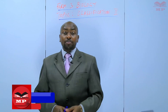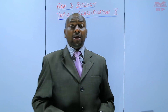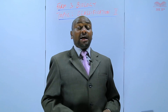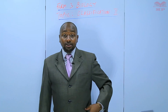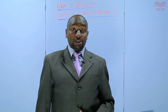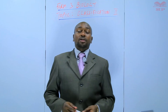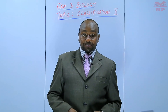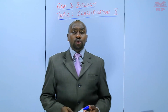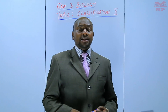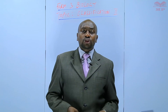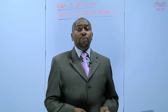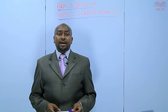In our previous lesson we introduced the biological keys, whereby we identified one of the keys as the dichotomous key. Then we went ahead to study the rules for constructing a dichotomous key. Today we are going to study the common identification features that are used by animals and also plants when we are constructing a dichotomous key.